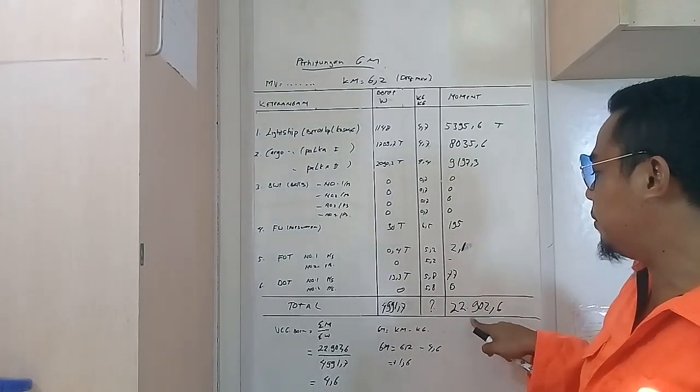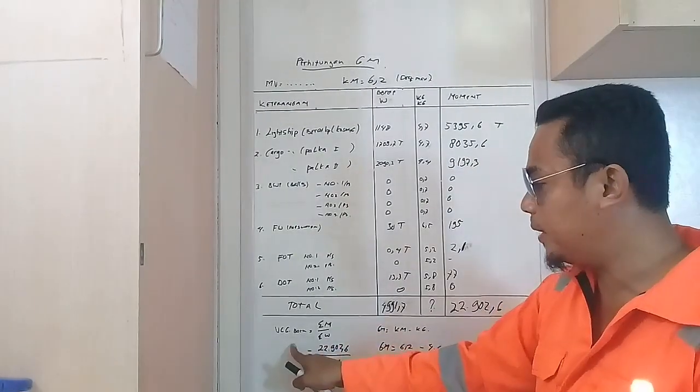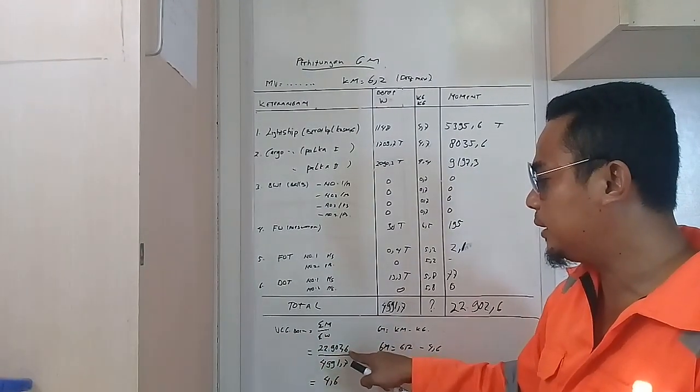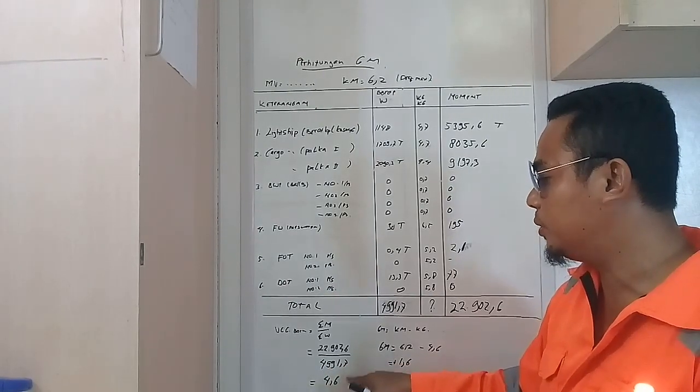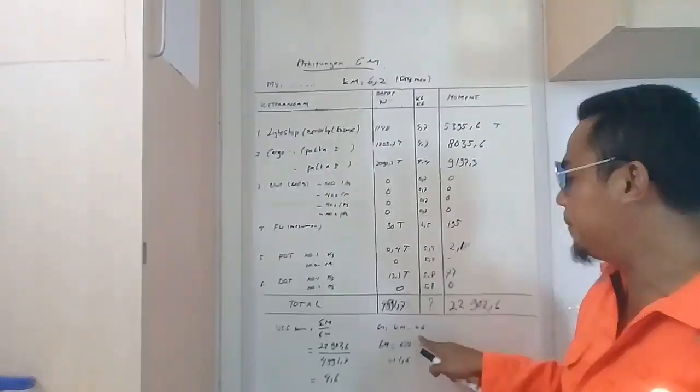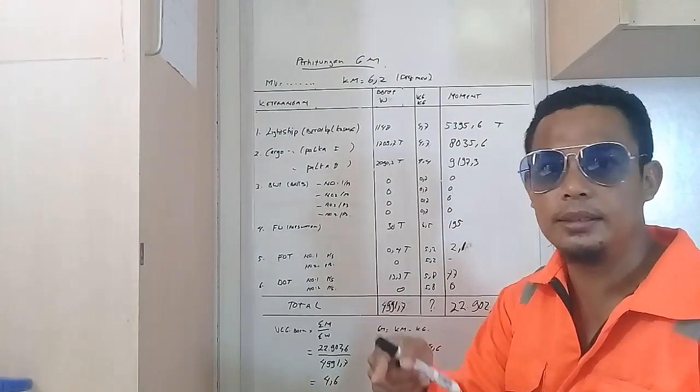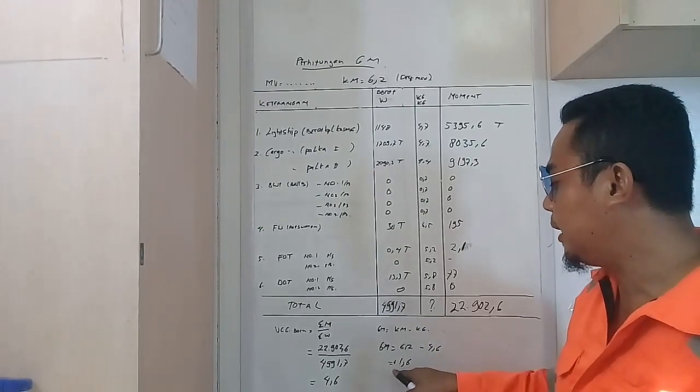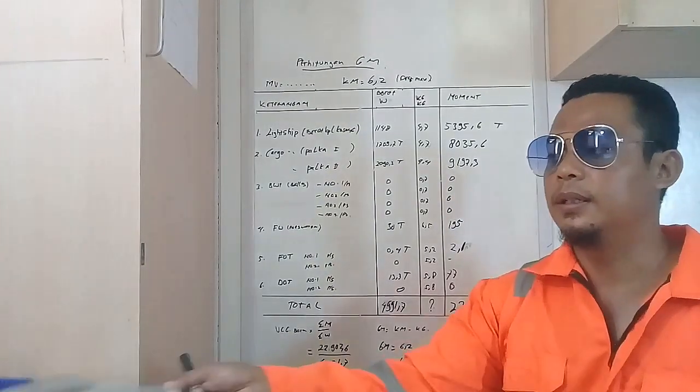Rumus KG baru, yakni sigma momen per sigma berat, yakni 22.902,6 per 4.591,7, didapat KG baru 4,6. Jadi GM, rumusnya KM minus KG. GM didapat dari buku tadi, data tadi 6,2, dikurangi KG baru 4,6. Kita GM-nya 1,6. Berarti GM kita positif.